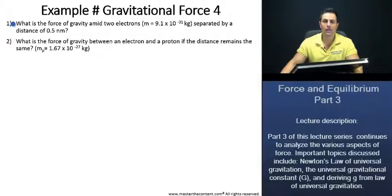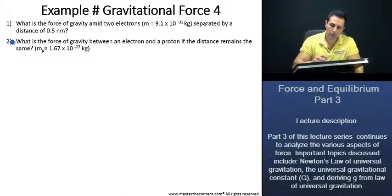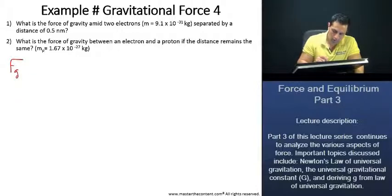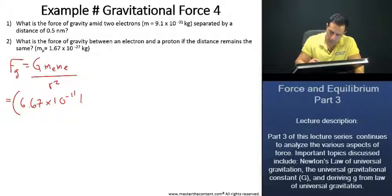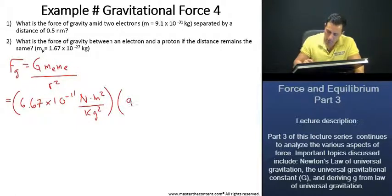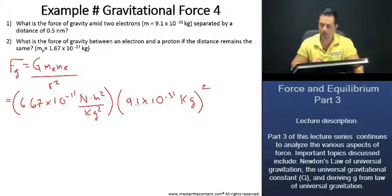On this slide, we'll tackle number one. Let's begin with our equation that we've been using. We are looking for the force of gravity amid two electrons. Here is electron one, here is electron two, and the distance between them is R squared. If we fill in our values, the gravitational constant is 6.67 times 10 to the power of negative 11 newton meters squared per kilogram squared. The mass of an electron is 9.1 times 10 to the power of negative 31 kilograms, and we can just square that.